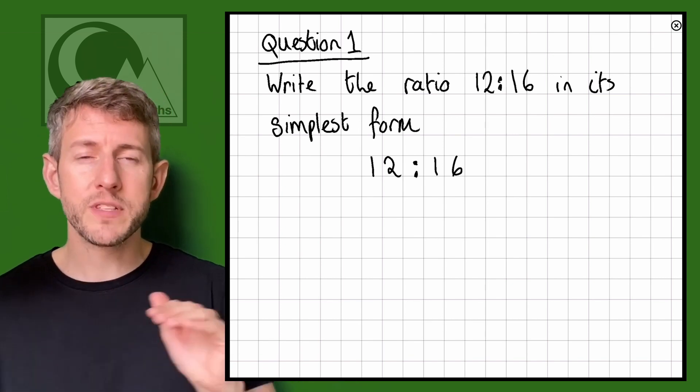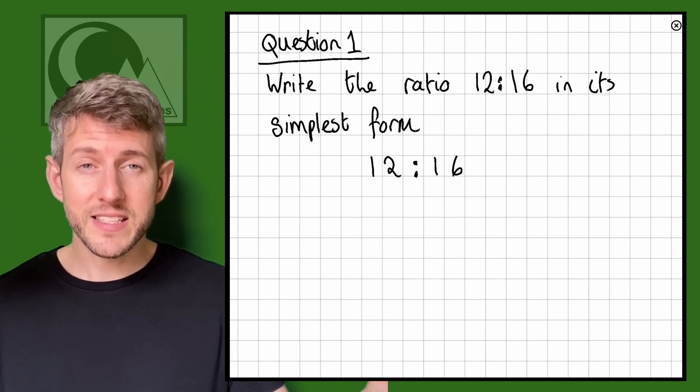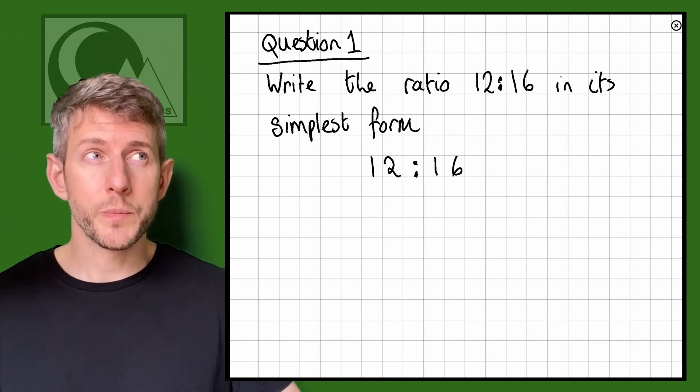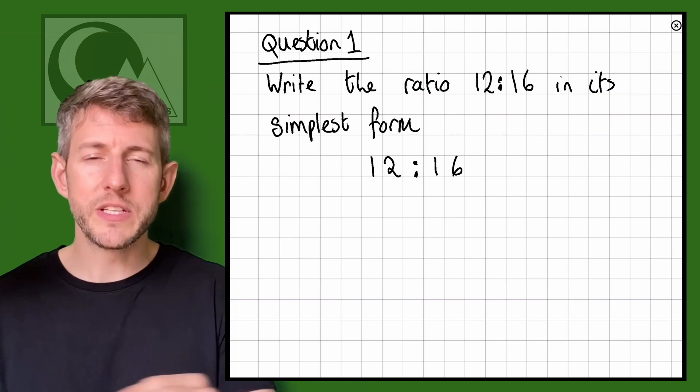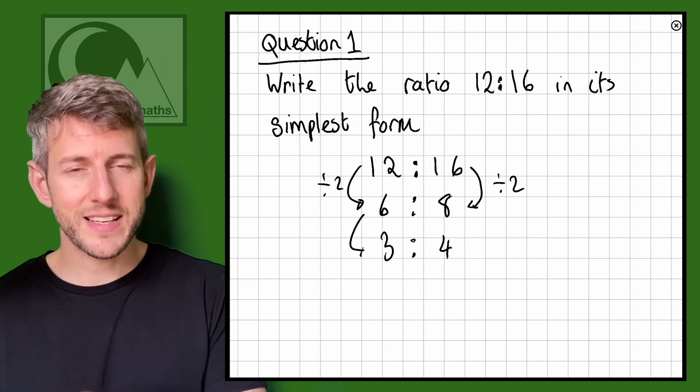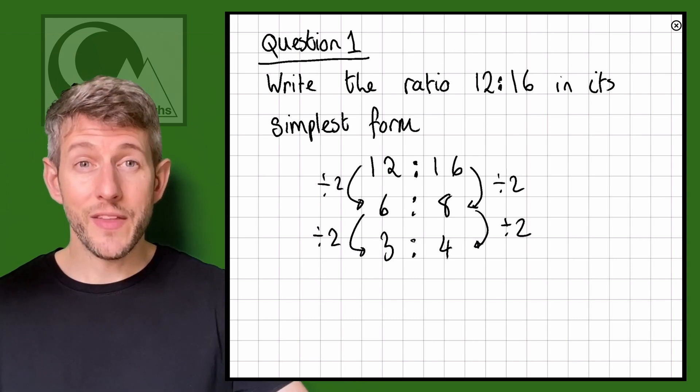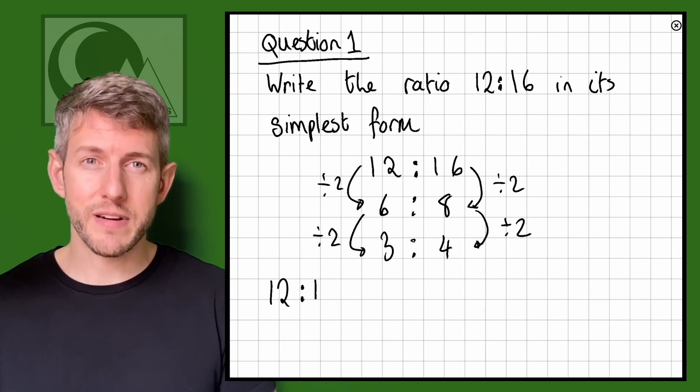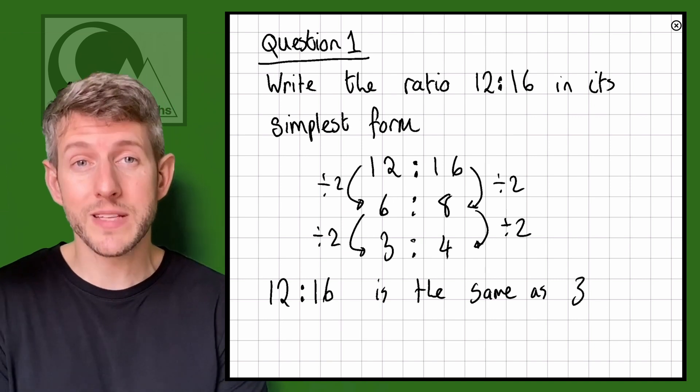We know that 12 to 16 can simplify down to three to four and the way that we do that is we can do it in stages. So 12 to 16 is going to be the same as six to eight and then that's going to be the same again as three to four because we've been going up and going down at the same rate.